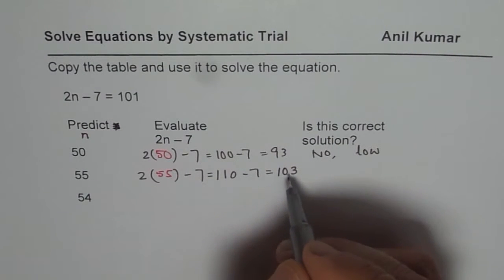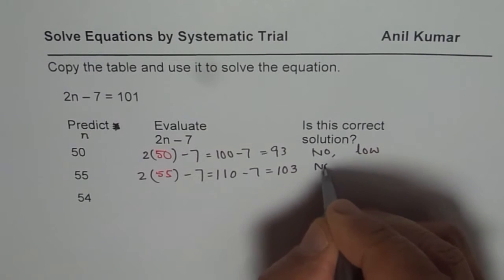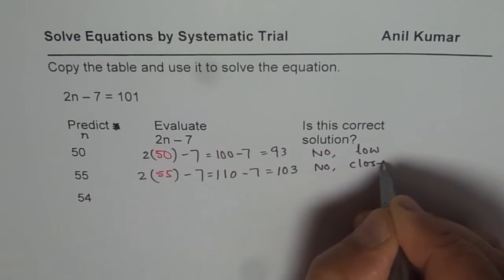103 is just above 101, so we are close. We are very close. But on the positive side, we need to get a number which is slightly lower than 55.